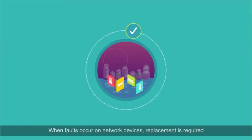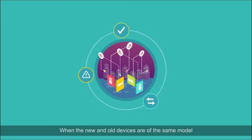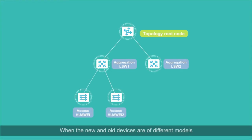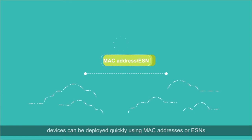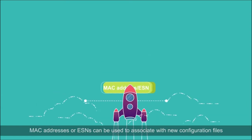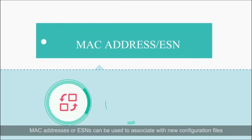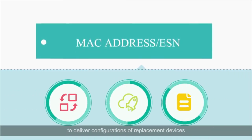When faults occur on network devices, replacement is required. When the new and old devices are of the same model, the system software and configuration files can be delivered automatically — that is, plug and play. When the new and old devices are of different models, devices can be deployed quickly using MAC addresses or ESNs. MAC addresses or ESNs can be used to associate with new configuration files to deliver configurations of replacement devices.